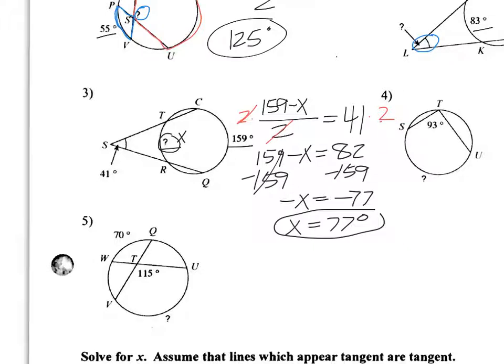Now, one thing to note, I know my answer makes sense because the angle that's in the middle here has to be in the middle of these two numbers. Let me say it again. The angle that's in the middle has to be in the middle of those two numbers. And 77 here is between 159 and 41.